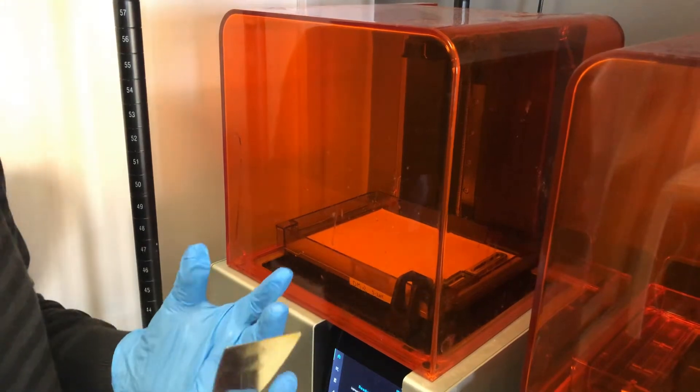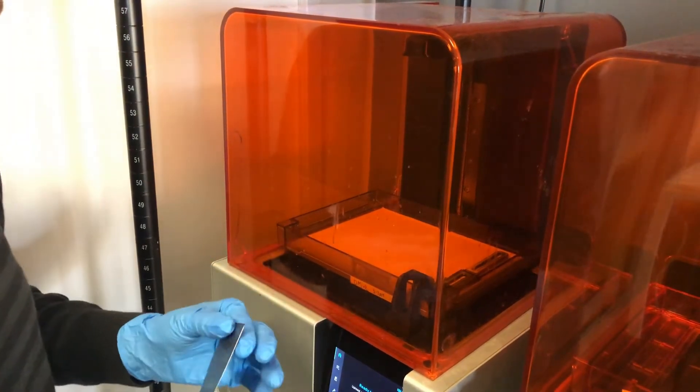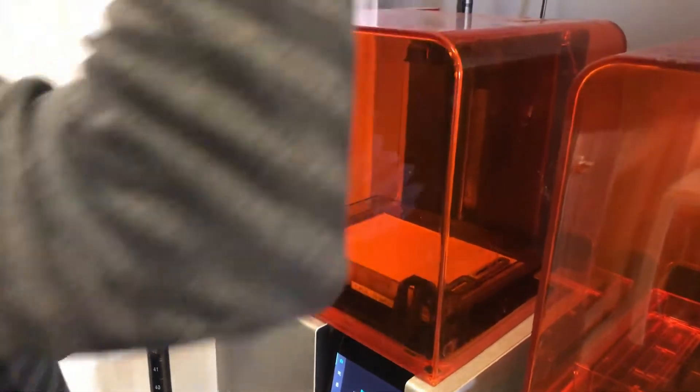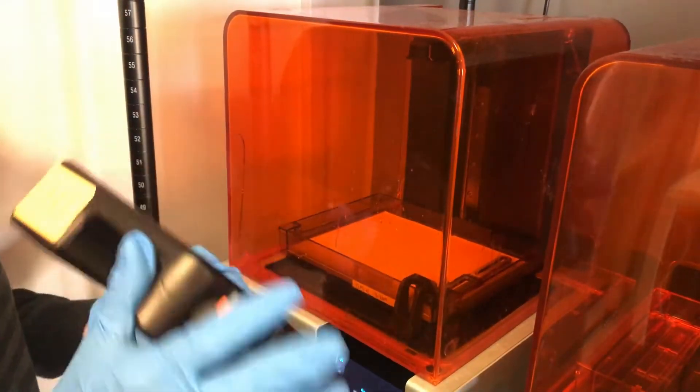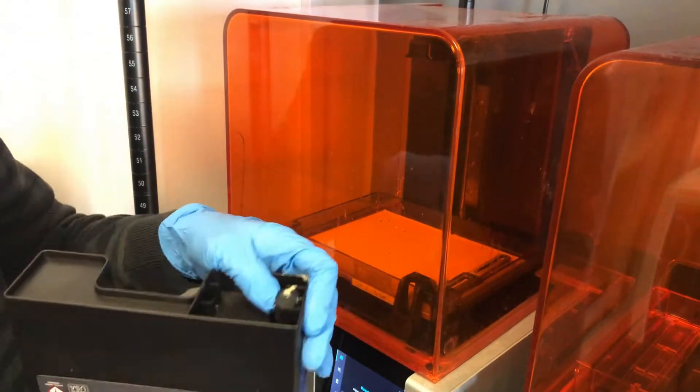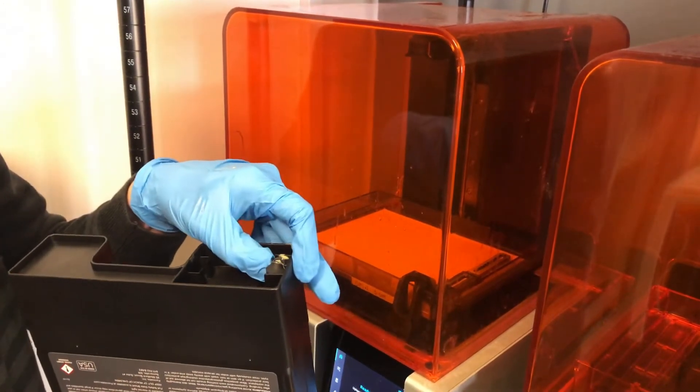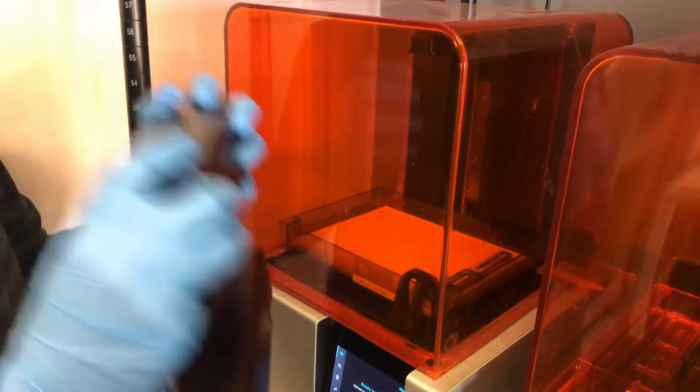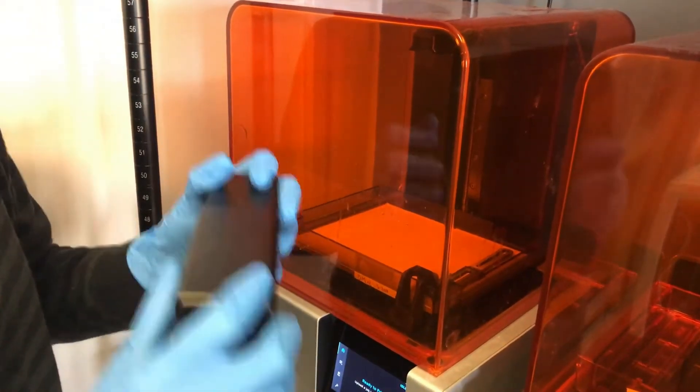Three steps that I do before every print, especially using dental model resin. I always check my cartridge, close the valve, and check the bite valve itself. I'll pinch it just to make sure it's flowing and there's no debris in the way, and then I'll give it a good shake.